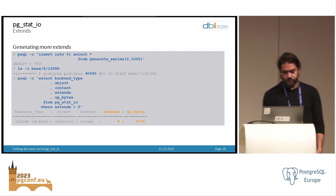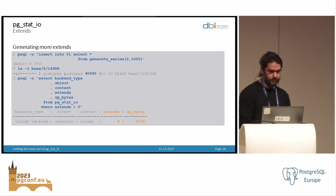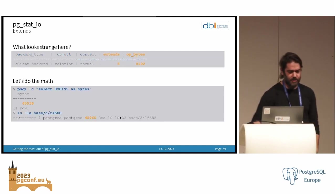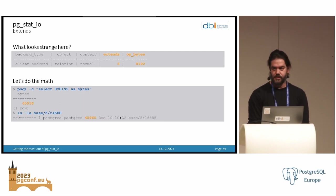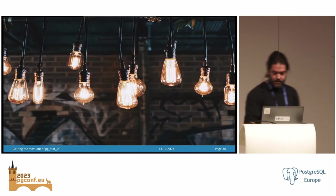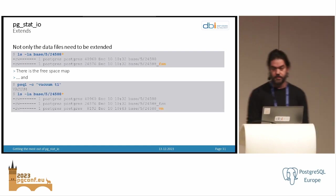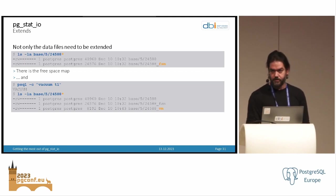Let's generate some more data. If we extend that a bit, we got 8 extents and this file size is 40,000-something bytes — 8 multiplied by 8k. So where do the other counts come from? We don't have only data files — we also have the free space map and if vacuum did something, we also have the visibility map, and those also need to be extended. So keep in mind, it's not only the data files that need extents, it's also the free space map and the visibility map.